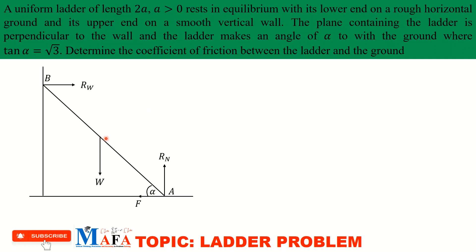Finally, we have the weight of the ladder W, which acts vertically downwards. Since this is a uniform ladder, the weight acts at the center of the ladder. Since the ladder has length 2a, the distance from B to the center is a, and the distance from the center to the foot A is also a.